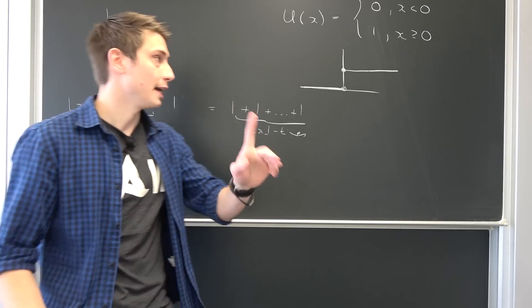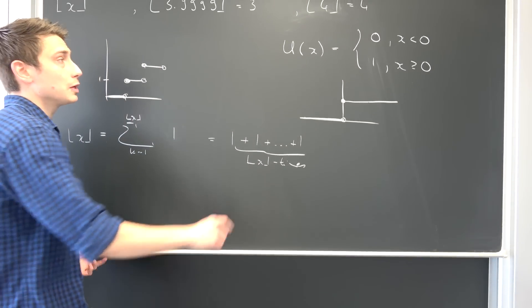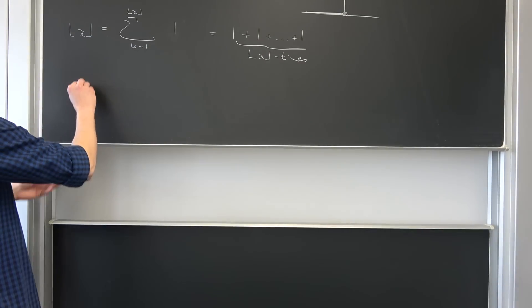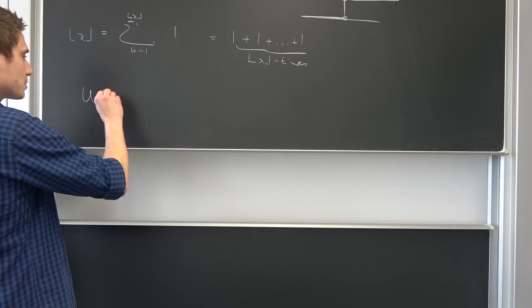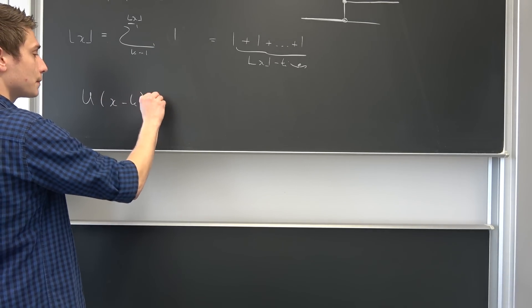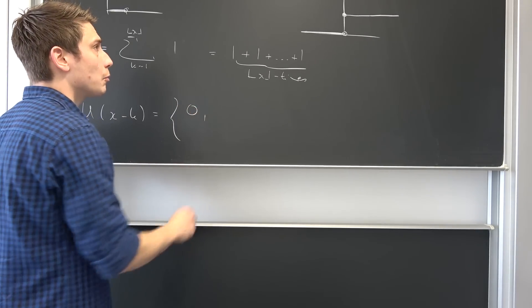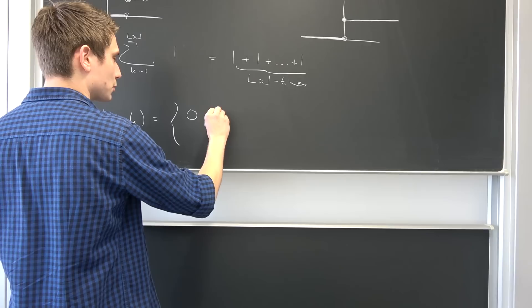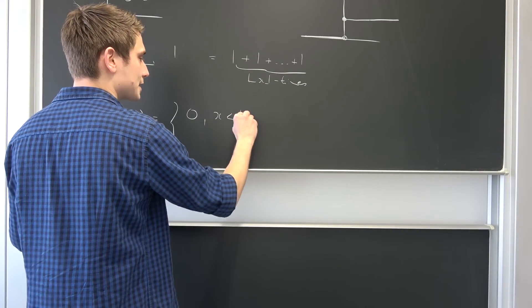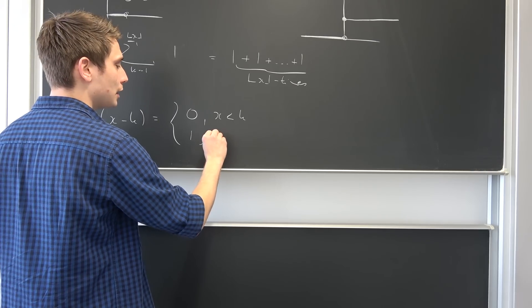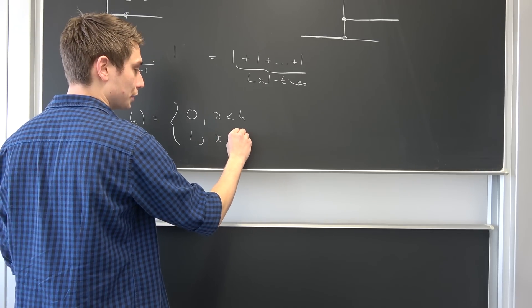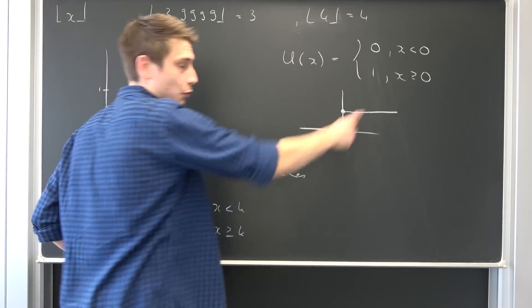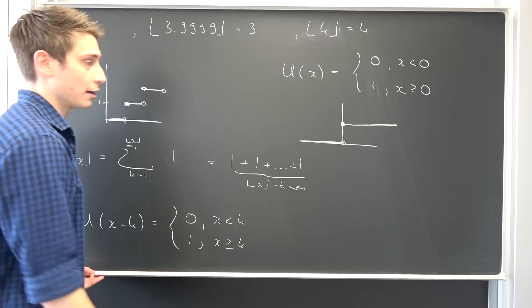And this is pretty good because if we do a little change of index right here in our u of x. For example saying that we have u of x minus k, in this case we are going to end up with 0 whenever x minus k is less than 0, meaning that's equivalent to saying x is strictly less than k, and we have 1 whenever our x is greater or equal to k. I hope this does make sense. This is just a rewriting this definition right here. Pretty simple stuff actually.